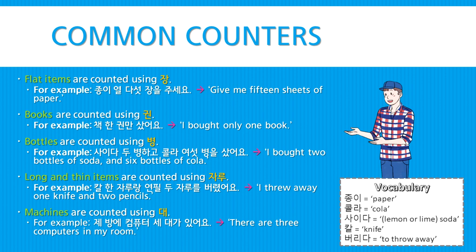Long and thin items are counted using 자루. For example, 칼 한 자루랑 연필 두 자루를 버렸어요 — I threw away one knife and two pencils. Machines are counted using 대. For example, 제 방에 컴퓨터 세 대가 있어요 — There are three computers in my room.